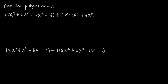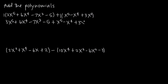We do have like terms across our polynomials. For example, we have 3x to the fifth in the first polynomial and 1x to the fifth in our second polynomial, so we want to add those together. But before we can do that, we need to remove our parentheses. The way we do that is by remembering the implied 1 out in front of our parentheses. We use the distributive property and distribute that 1 across each term, giving us plus x to the fifth minus x to the fourth plus 3x squared.